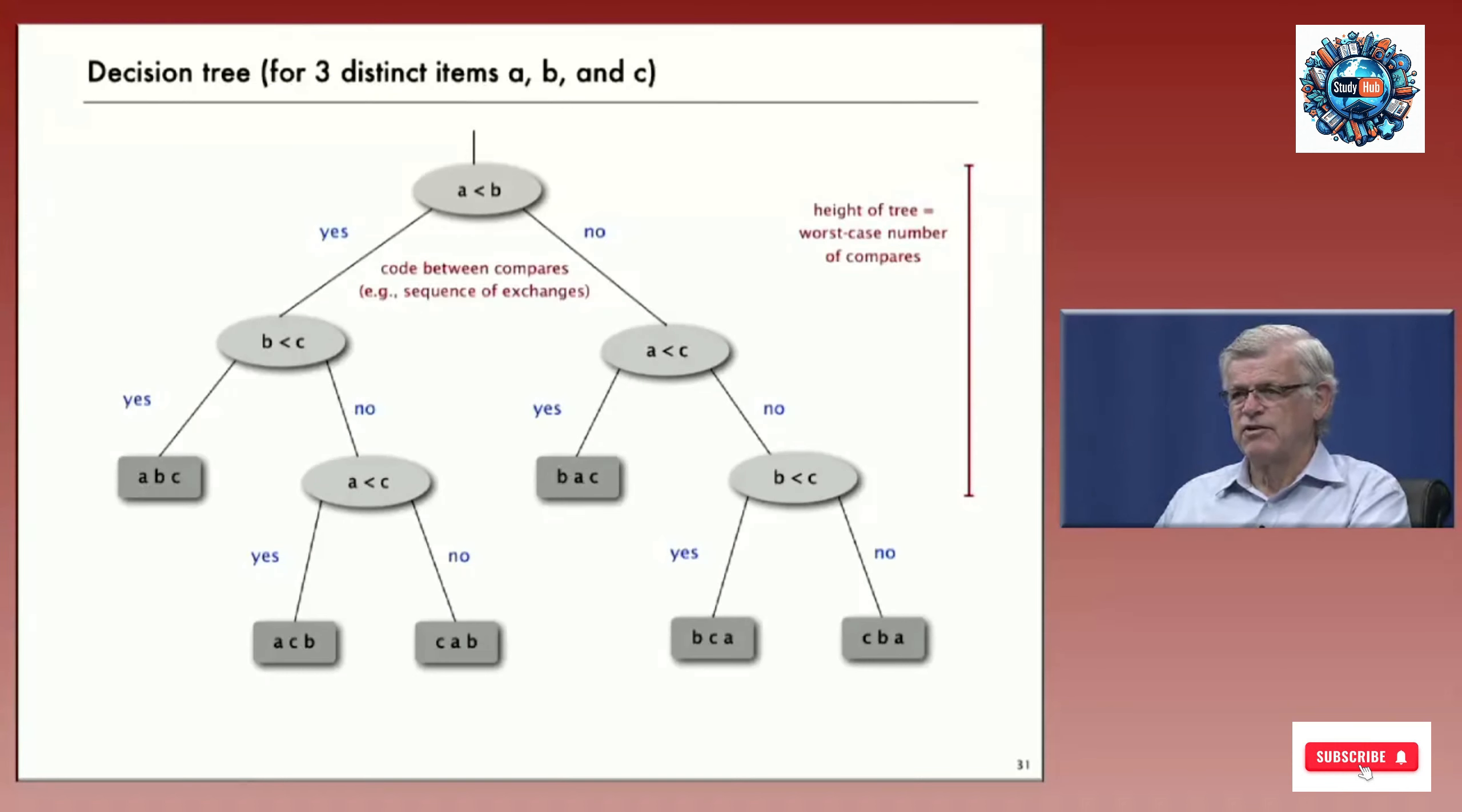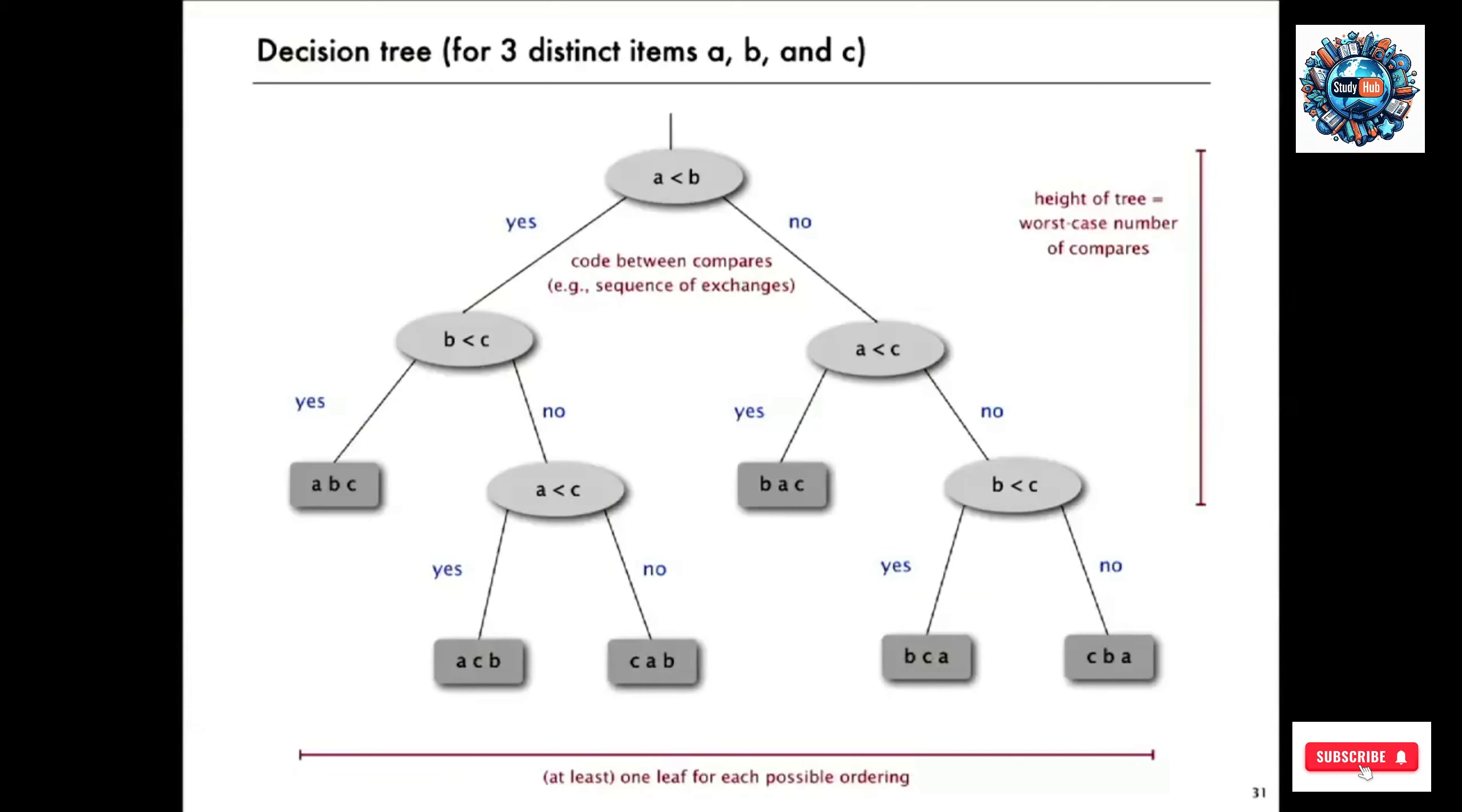Now, the height of the tree, as I just mentioned, is the worst case number of compares. Out of all the orderings, the one that's furthest down in the tree, that's the worst case. And so the algorithm, no matter what the input is, the tree tells us a bound on the number of compares taken by the algorithm. And there's got to be at least one leaf for each possible ordering. If there's some ordering that does not appear in a tree corresponding to a particular algorithm, then that algorithm can't sort, can't tell the difference between two different orderings.